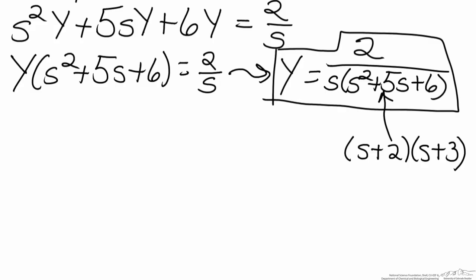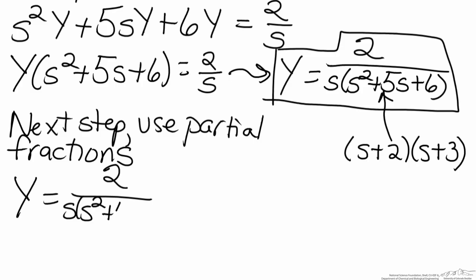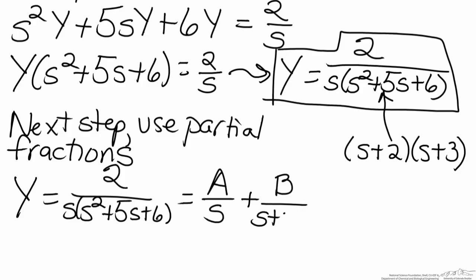We do have Laplace transform entries for a over (s plus 2) and b over (s plus 3) where a and b are constants, so we need to find those constants. To do that we use the method of partial fractions. We break our function up using the separated roots, so Y equals 2 over [s(s plus 2)(s plus 3)], which equals a over s plus b over (s plus 2) plus c over (s plus 3).